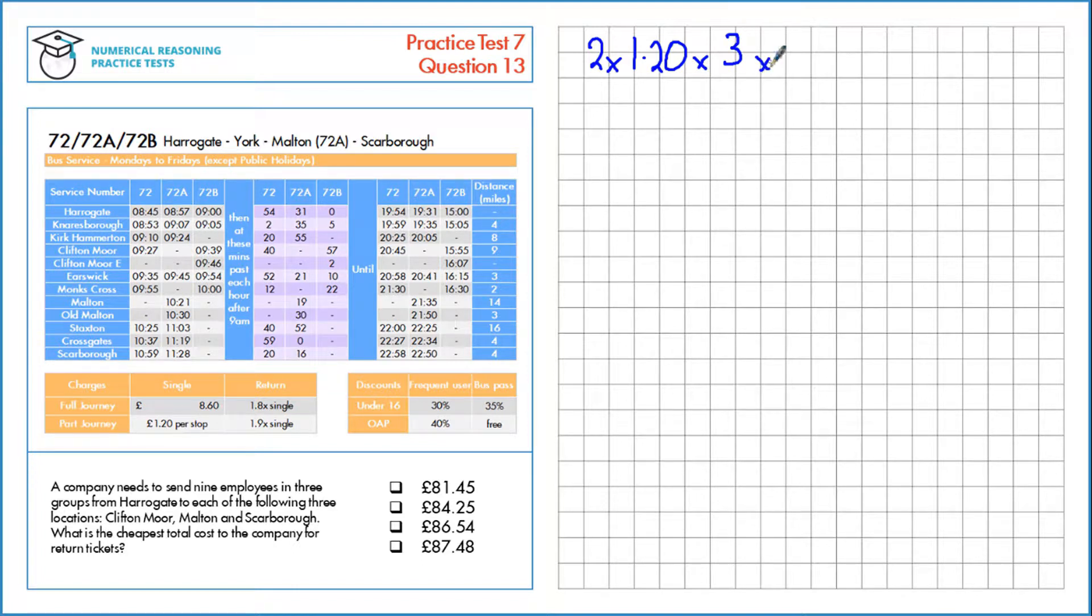Then multiply by 1.9 because we want to calculate the return price, which is 1.9 times a single. That gives us a total cost of £13.68.